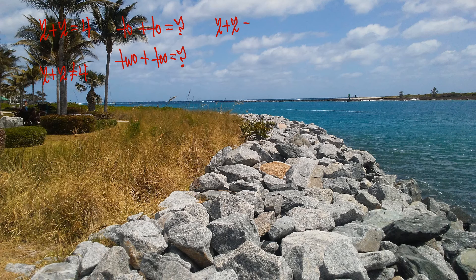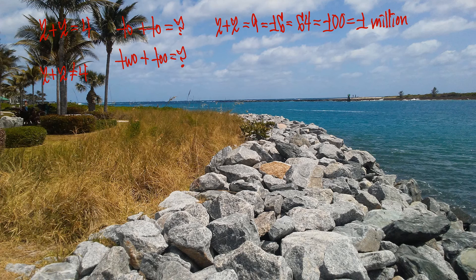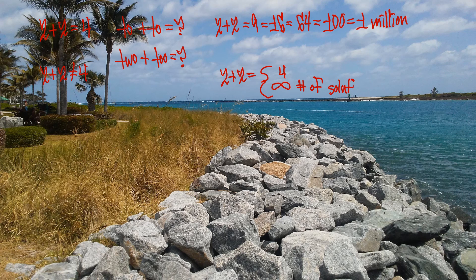I know how 2 plus 2 can equal 9, or it can equal 16, or it can equal 64, or it can equal 100, or 1,000,000, or even more. There are an infinite amount of solutions. Why are you saying 2 plus 2 equals 4 only? That is not true. It should be a calculus kind of thing that says 2 plus 2 equals 4, and then an infinite number of solutions. That's what it should say.